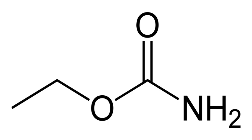Ethyl carbamate, also called urethane, is an organic compound with the formula CH3CH2OC-O-NH2. It is an ester of carbamic acid and a white solid.